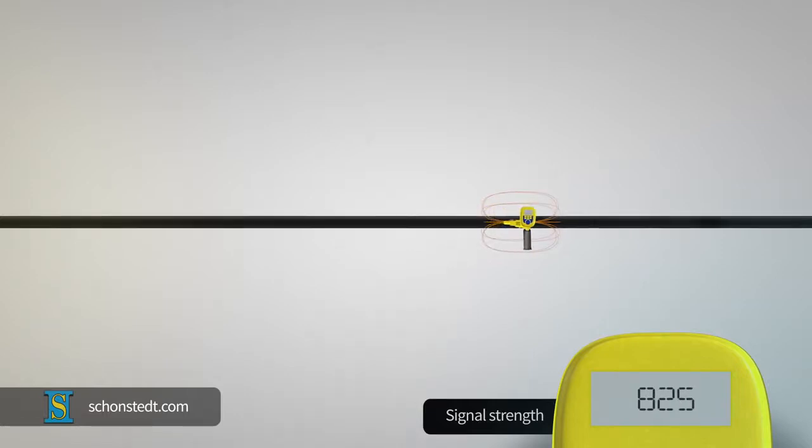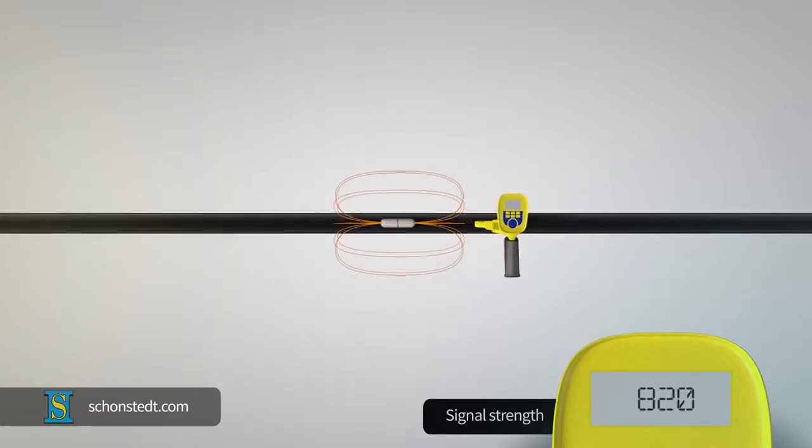When you move past the sonde location, the signal will start dropping again, giving you a general idea of the sonde's location.